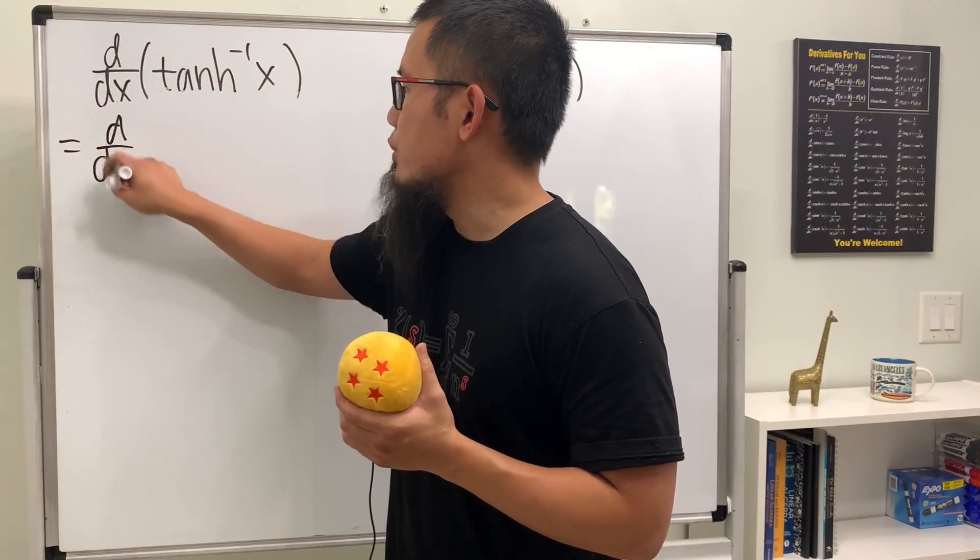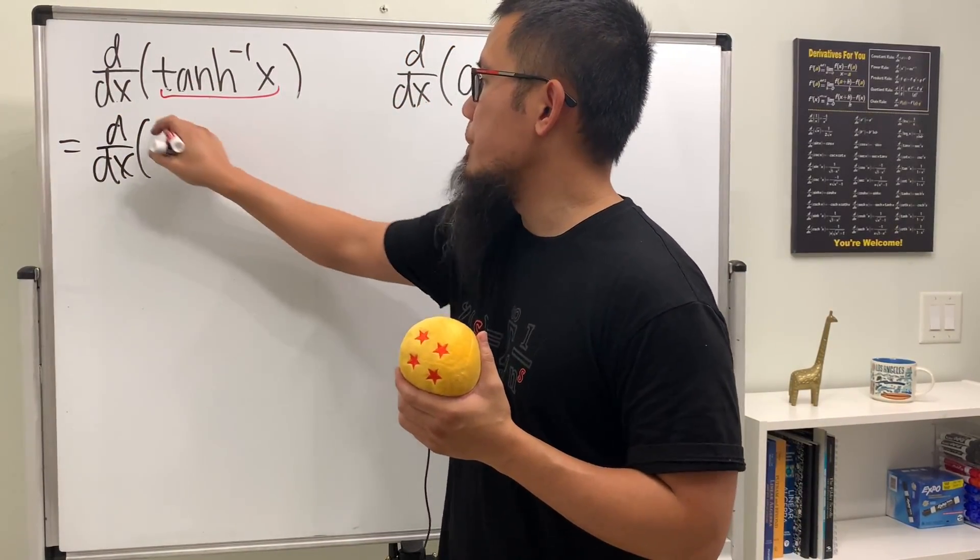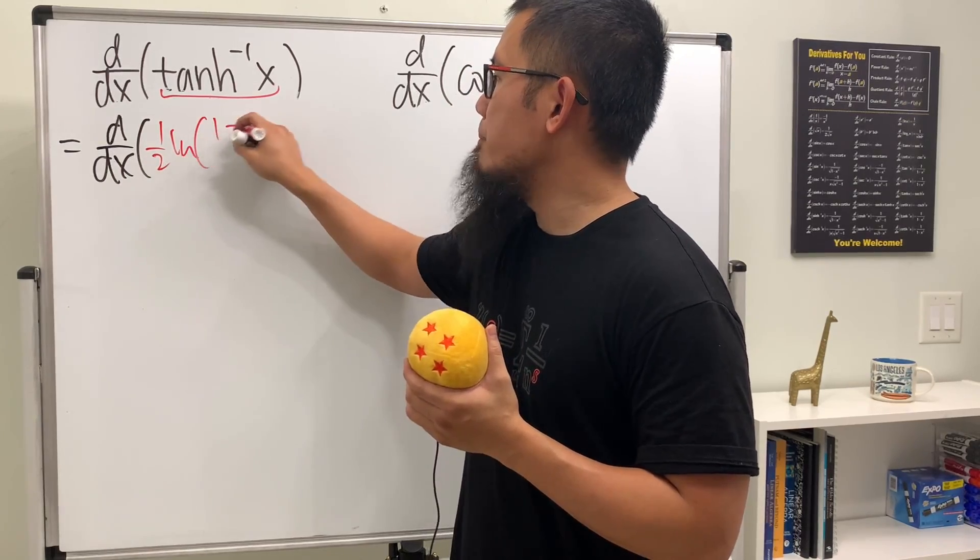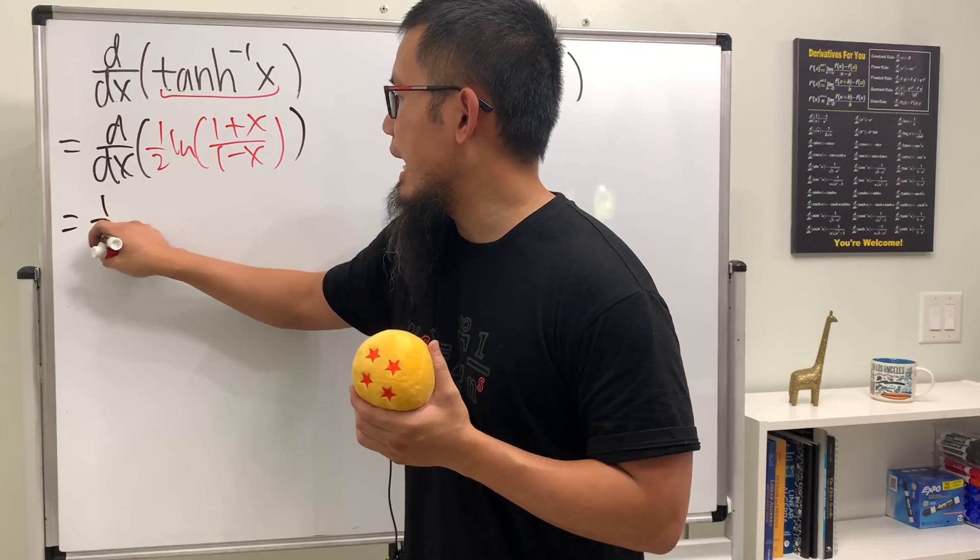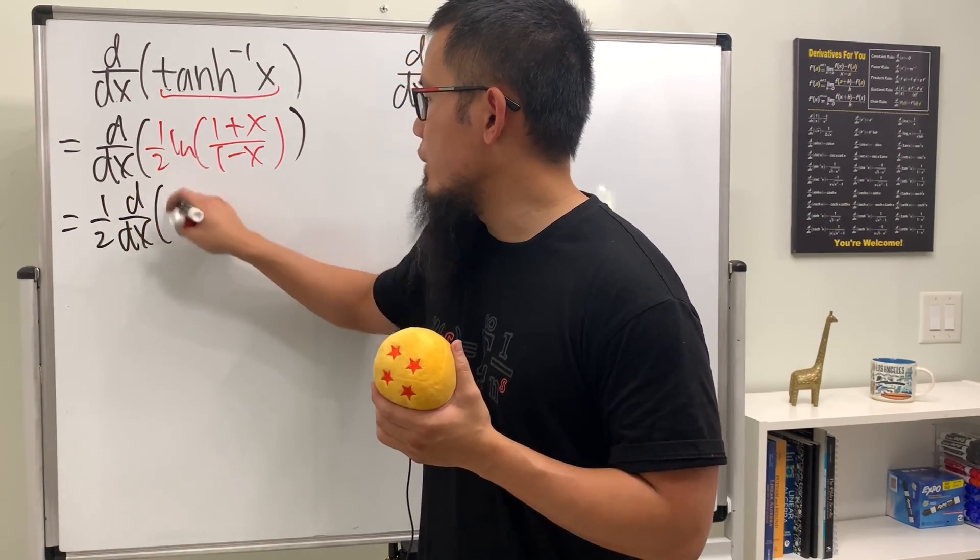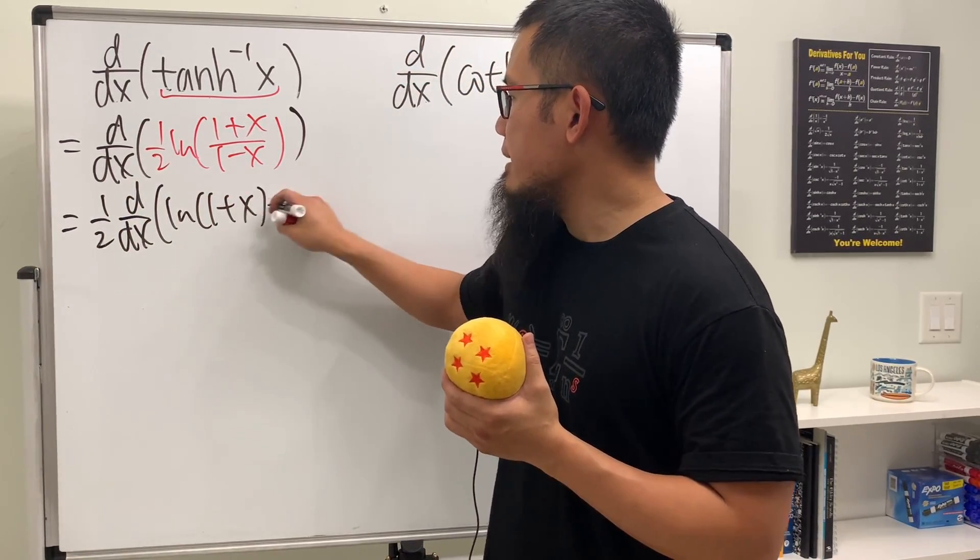First, for the inverse hyperbolic tangent, we can look at this in the ln form, which is going to be 1/2 ln of (1+x)/(1-x). Now we can write this down as 1/2, and then d/dx, and then right here we have ln of the top and then minus ln of the bottom.